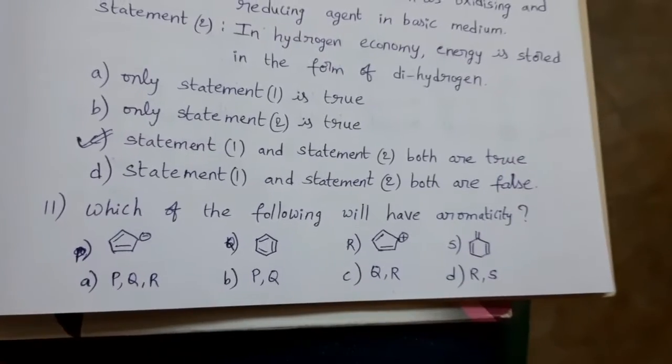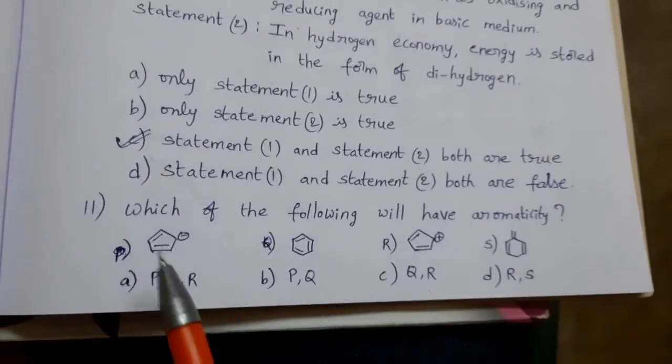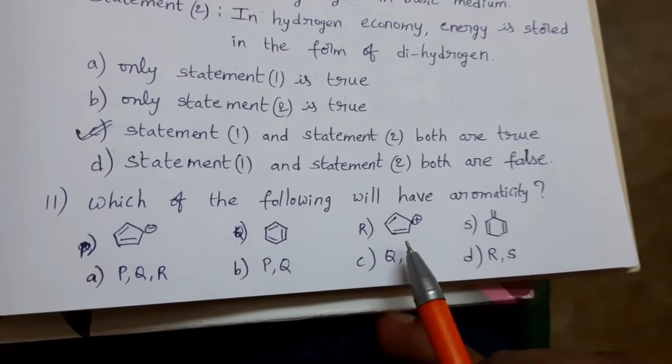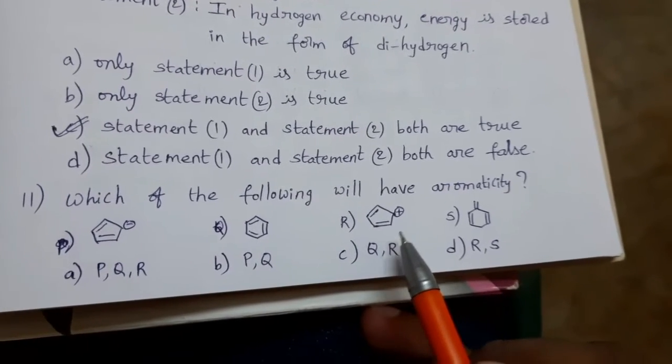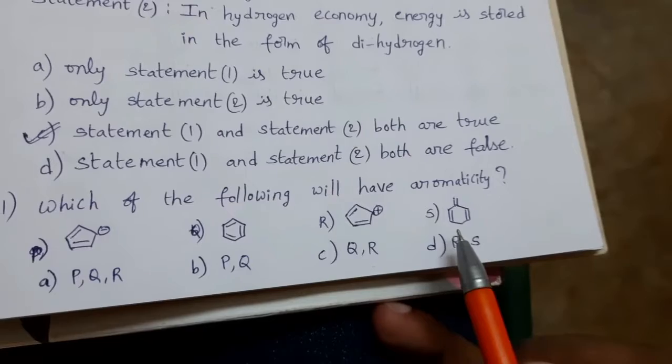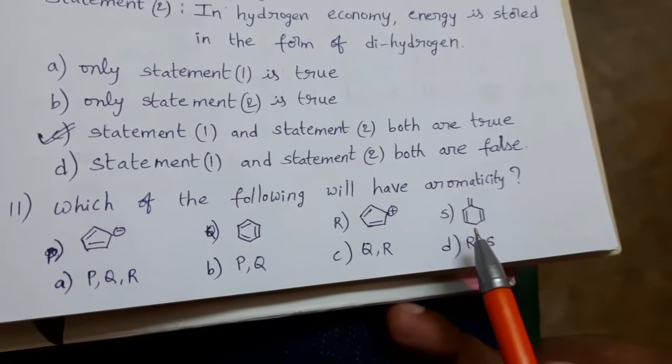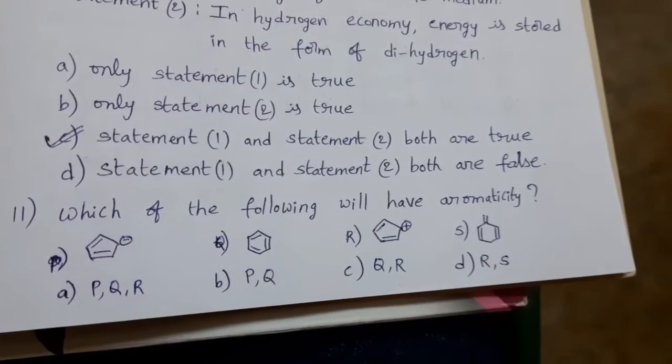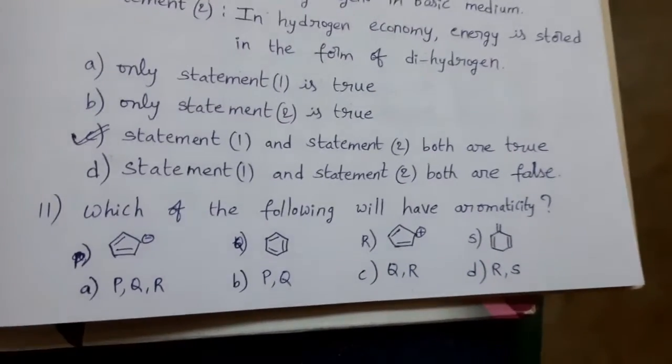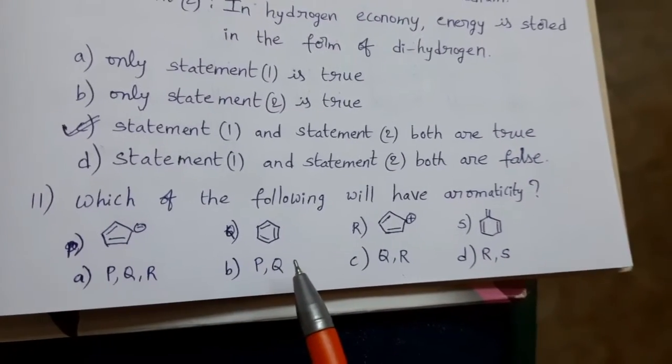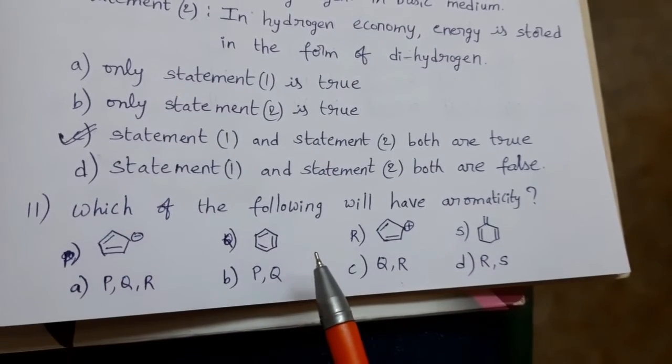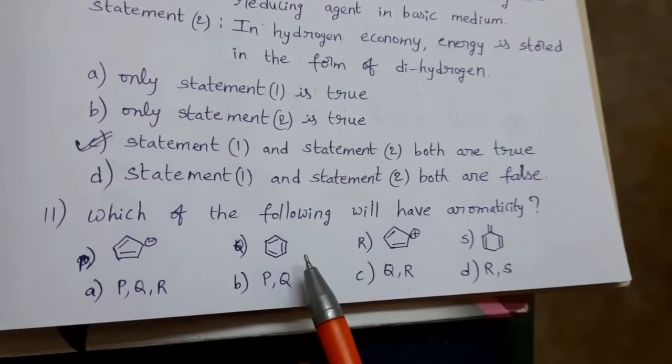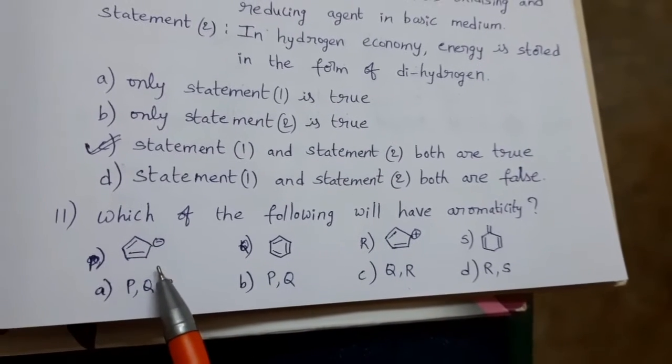Which of the following will have aromaticity? This is cyclopentene anion, benzene, cyclopentene carbocation, and cyclohexadiene with one CH2 group attached to the outside of the ring. In that, which species have aromaticity? Benzene is an aromatic compound, no doubt. Now, come to the remaining.